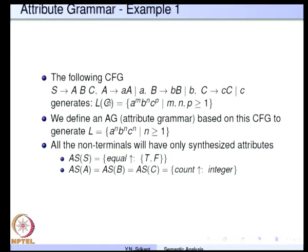Take a context-free grammar: S → ABC, A → AA | a, B → BB | b, C → CC | c. This generates the language A^m B^n C^p where m, n, and p are greater than or equal to 1, with no relationship between m, n, and p. Suppose we want to generate A^n B^n C^n — that is, the counts of A, B, and C are equal, with n ≥ 1. This is obviously a context-sensitive language and definitely not context-free — no context-free grammar can generate A^n B^n C^n.